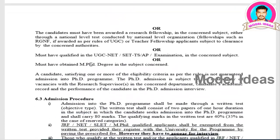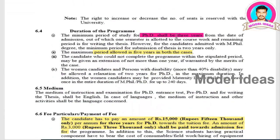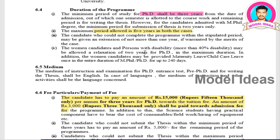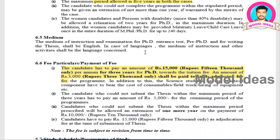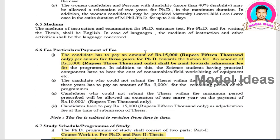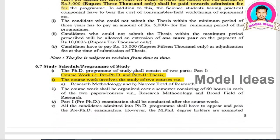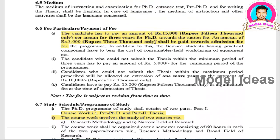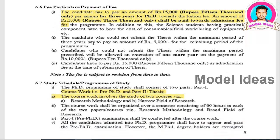The PhD must be completed within 3 years, and can be extended up to 5 years. Beyond 5 years, you need to pay 15,000 rupees as a penalty every year. The academic fee is 15,000 rupees per year plus 3,000 rupees, totaling 18,000 rupees per annum.